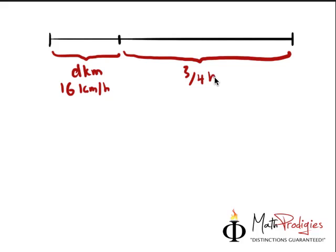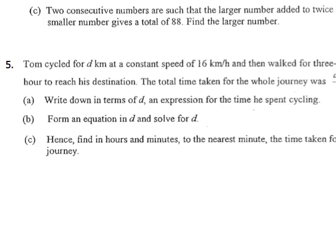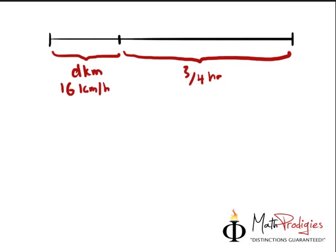Therefore this is the time taken, three-quarter of an hour to reach his destination. The question says the total time taken for the whole journey was D minus 3 over 8. So the time taken for the whole journey is D minus 3 over 8 hours.